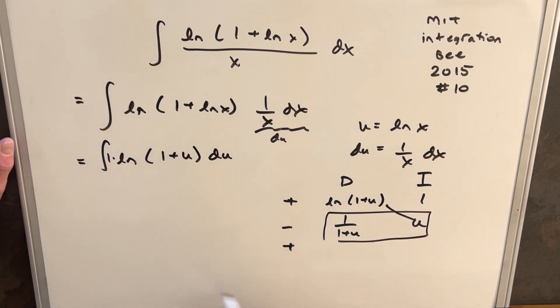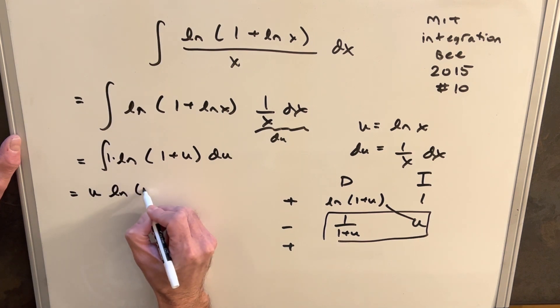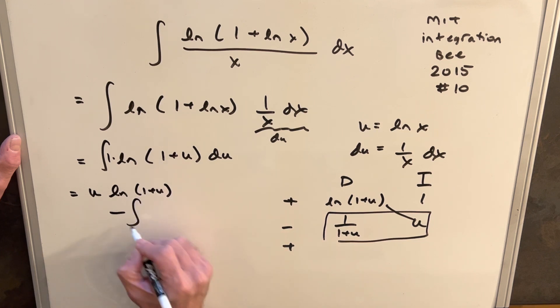We take on diagonal our first value. So we're going to have u ln 1 plus u. And then minus, because we have a minus sign here, the integral of u over 1 plus u.